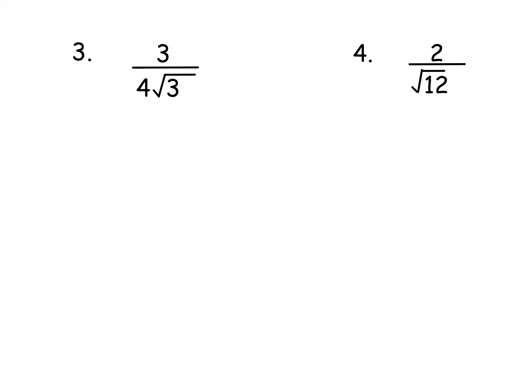Okay number 3 already has a 4 on the bottom. So remember my rule was times top and bottom by the surd. The surd is the root 3 so there's no point in times by the 4. You can though it just makes your numbers more complicated and gives you more to simplify. So we are just going to multiply by the surd so we're going to times top and bottom by root 3.